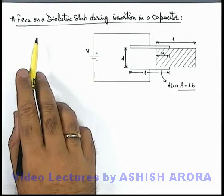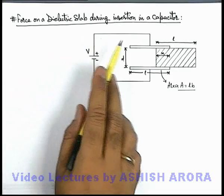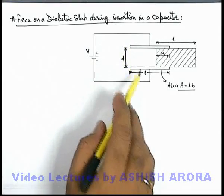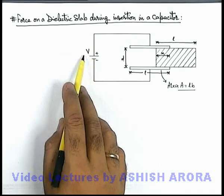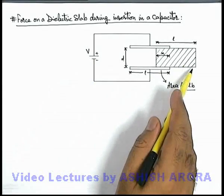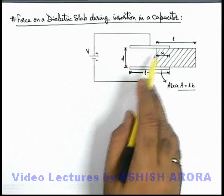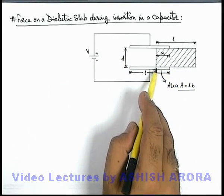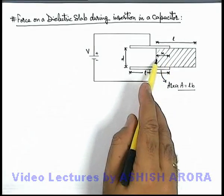Let us study the force on a dielectric slab during insertion in a capacitor. You can see in this picture there is a capacitor which is connected to a battery of potential difference V, and a dielectric slab which can completely fill the space between the capacitor is being inserted into it. Right now it is inserted up to a distance x.